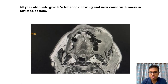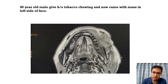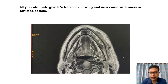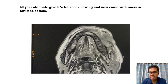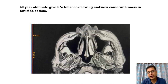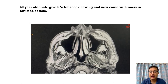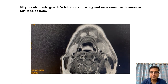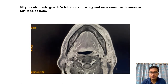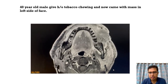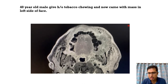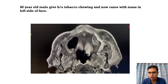This mass is involving the skin — it's an ulceroproliferative mass — extending to involve the masticator space. The inferior alveolar canal is also involved. On the T1 post-contrast axial images, we can again see that the epicenter of this mass is in the retromolar trigone and the alveolar ridge.